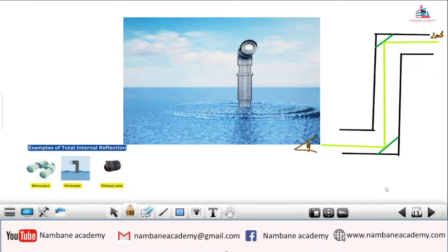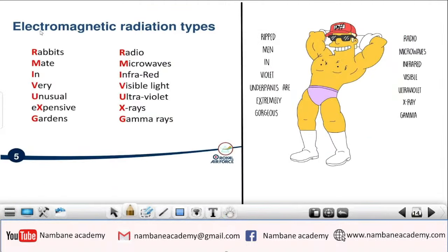When we speak about light, we must never forget that light is part of the electromagnetic spectrum. Here's a mnemonic to remember them: 'Rabbits mate in very unusual expensive gardens' — radio, microwaves, infrared, visible light, ultraviolet rays, x-rays, and gamma rays. Or another one: 'Ripped men in violet underpants are extremely gorgeous.' However you use a rhyme to remember them is up to you. But do not forget that visible light is part of the electromagnetic radiation spectrum.